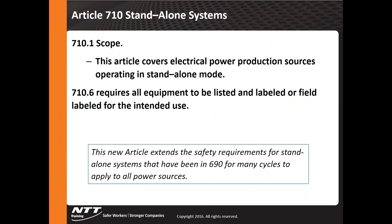Article 710 covers standalone systems — equipment that sits alone and provides its own standalone power, whether photovoltaic, wind power, or other generated sources such as fossil fuel. This is trying to make sure these systems are done safely. Similar safety requirements were laid out in Article 690; now they've been moved out to Article 710. Standalone power systems, controls, and components must be listed and labeled, including multi-wire branch circuits.